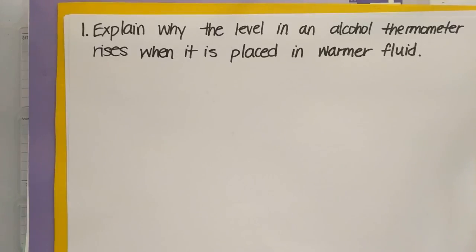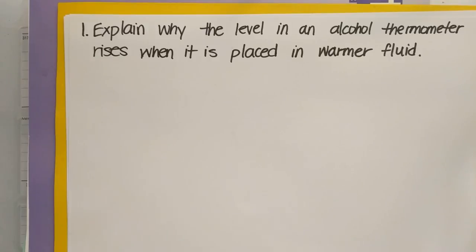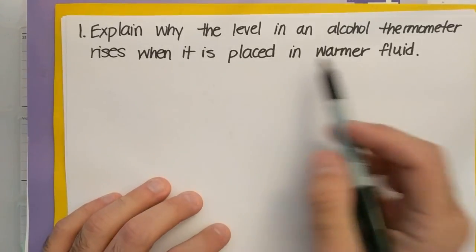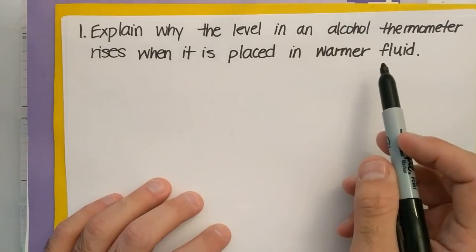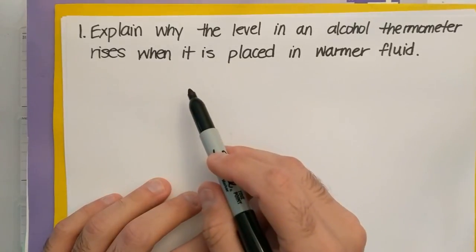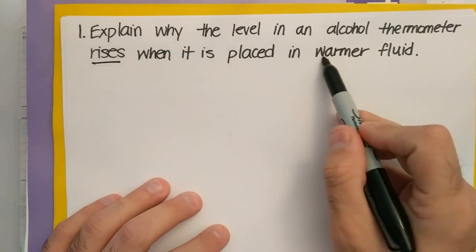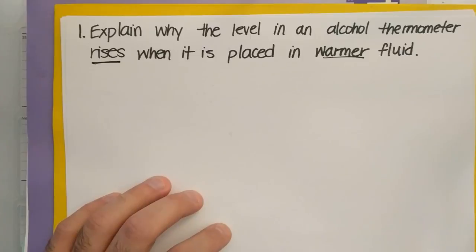Hey, Honors Chemistry. I wanted to post some review problems that I took from the review and from past worksheets to make sure that you could better prepare for our unit test this week. One of the first questions on your review sheet says: explain why the level in an alcohol thermometer rises when it is placed in warmer fluid.